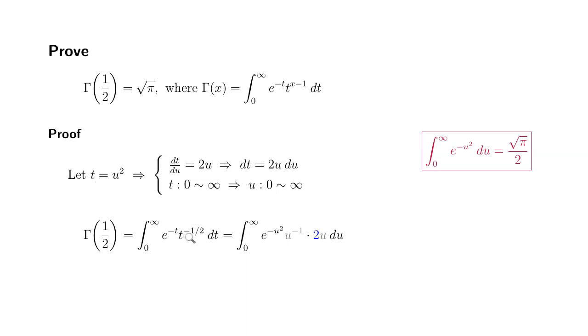and then raise it to the negative 1 half, so 2 cancel out, it's going to be u to the negative 1 power, and the dx that we found out to be 2u times du. So we put 2u times du.